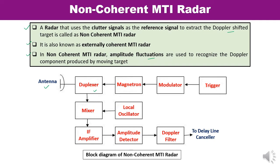When the signal is transmitted from the transmitter section, it is transmitted via the antenna. During the availability of a target, some of the transmitted signal is reflected back as the echo signal and processed through the receiver section. The first stage is a mixer and local oscillator, where the RF is converted into an IF. In non-coherent MTI, amplitude limiter is not used, because otherwise the desired amplitude fluctuations would be lost. Instead of a phase detector, an amplitude detector is used.